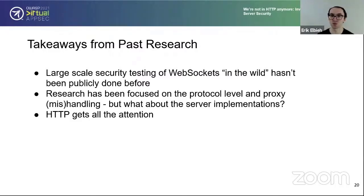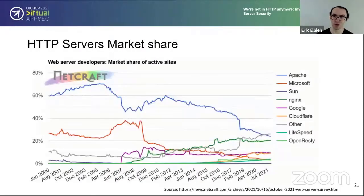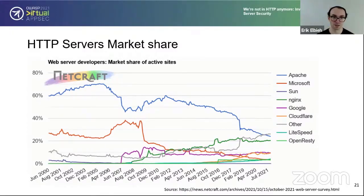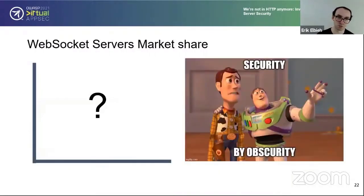The question remains: what about the server implementations and the security there? It does appear that HTTP gets all the attention. Some listeners may have seen graphs of the top HTTP servers — Apache and Nginx are probably the top two. We have this data going back over two decades for HTTP servers on the web. But we don't really know what's going on with WebSocket server implementations — it's kind of a question mark.